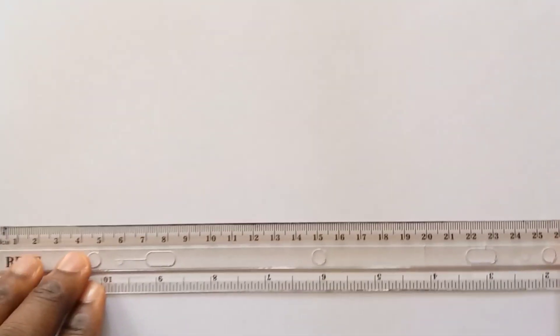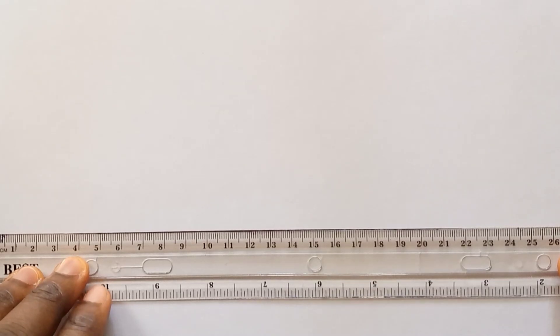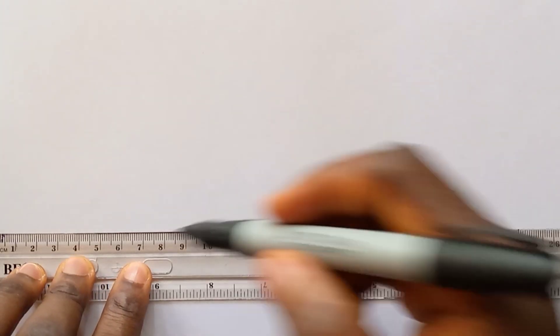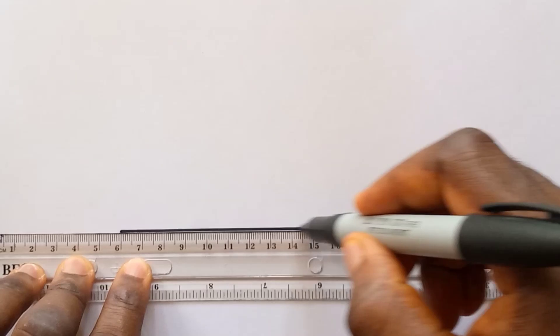Hello, in today's video I'll be demonstrating how to construct a perpendicular line. If you want to construct a perpendicular, the first step is to draw a horizontal line. Once you draw a horizontal line, you label it A and B.